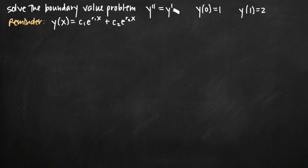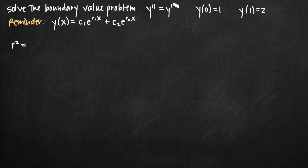The first thing we need to do with this equation is convert it into an equation in terms of r instead of y. The trick is to count the prime marks on each y variable to determine the exponent on the r variable. So y double prime becomes r squared because there are two hash marks, and y prime becomes r to the first power, which is just r.